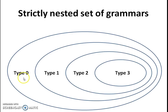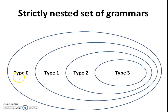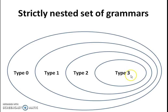Each and every grammar is identified based on their production rules. If certain criteria are met by a grammar, then it is known as Type 0 grammar. If another set of criteria is met by the production rule, then it is Type 1, and likewise for Type 2 and Type 3. Moving from Type 0 to Type 3, we have more restrictions on the production rules — Type 1 is more restrictive than Type 0, Type 2 is more restrictive than Type 1, and Type 3 is the most restricted form of grammar.